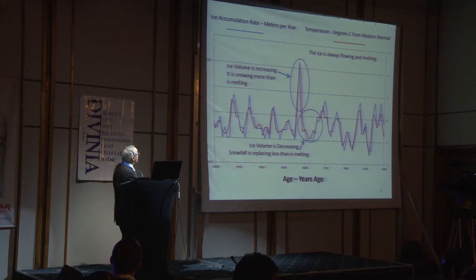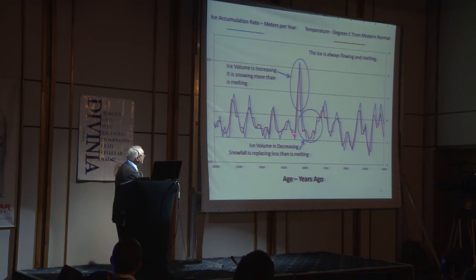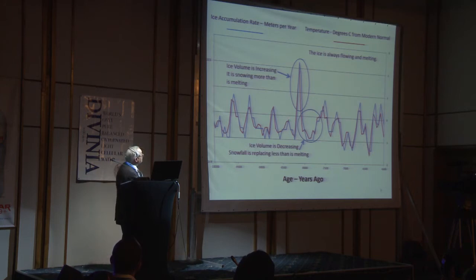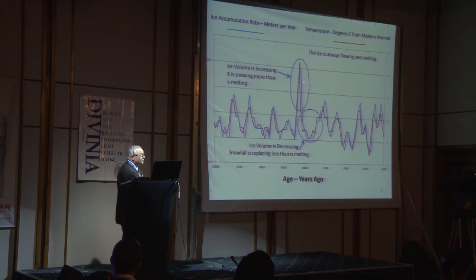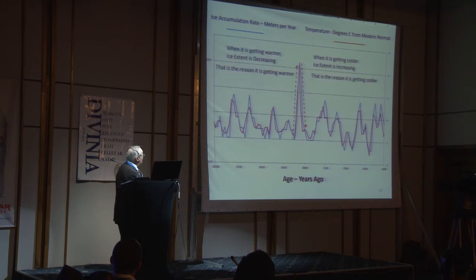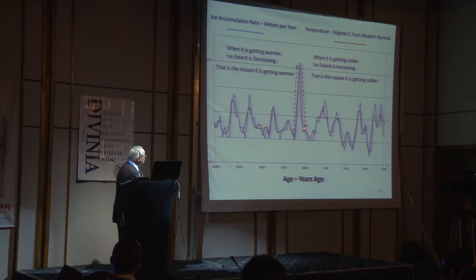If you look at an ice cycle, the warmest time is when it's snowing the most and volume of ice is increasing. The coldest time is when it's snowing the least and the ice volume is decreasing. The ice is always melting and flowing. When it snows more than it melts, it accumulates; when it snows less than it melts, it depletes. When the ice extent is increasing, we get cooling. When the ice extent is decreasing, we get warming.